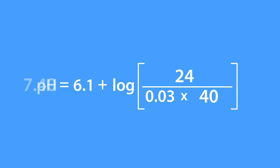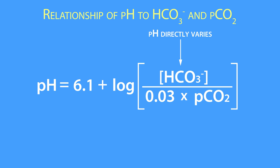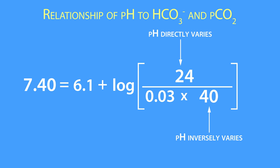Let's finish up with these important takeaways about the Henderson-Hasselbalch equation. First, the equation shows that pH directly varies with plasma bicarbonate and inversely varies with partial pressure of CO2. This means that changes in pH due to variations in plasma bicarbonate or partial pressure of CO2 can be corrected by changing the other variable.